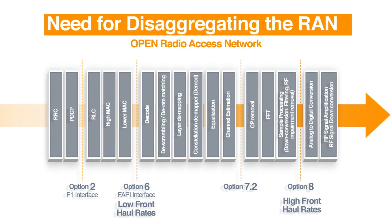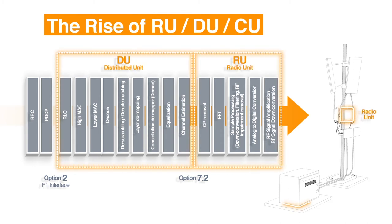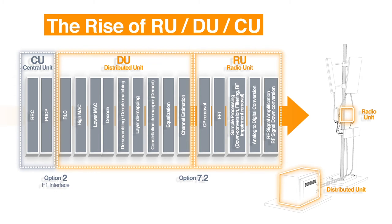Now let us see how this entire stack can be disaggregated. As we move options closer to RF, the fronthaul rates become prohibitive and very large. As we move options closer to the core network, the fronthaul rates become manageable. With split 7.2 and split F1, the RAN has been disaggregated into three principal hardware silos: the RU (Radio Unit), DU (Distributed Unit), and CU (Central Unit). RU performs RF and lower PHY functions, DU performs upper PHY functions, and the CU performs PDCP and upper functions.